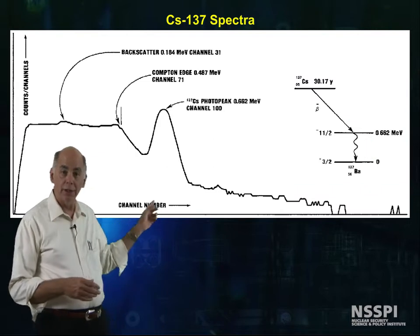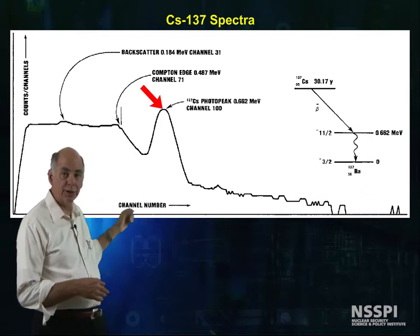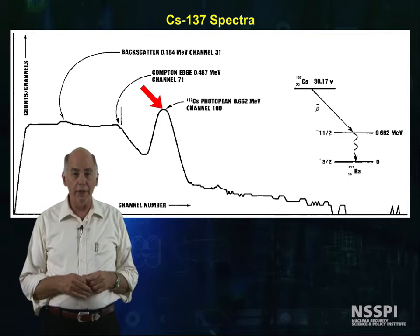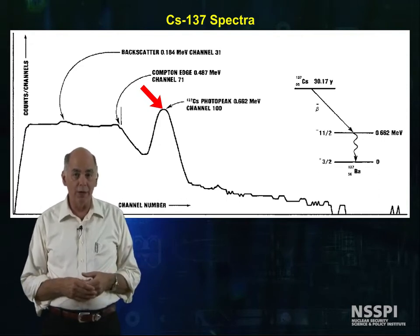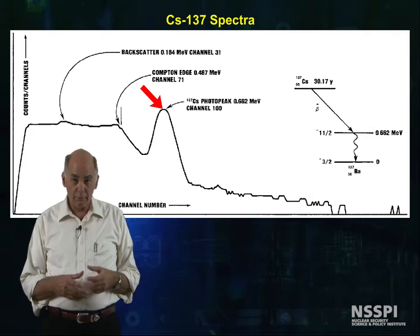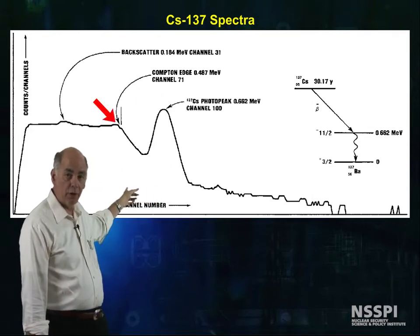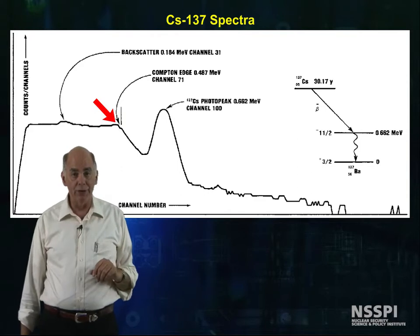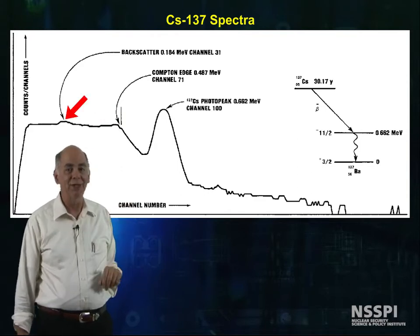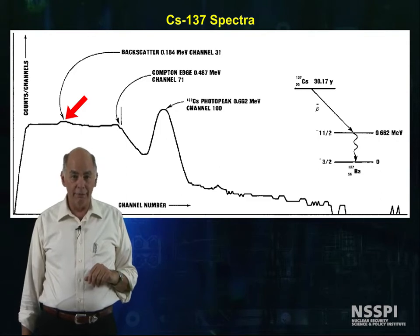Looking at the collected spectrum, here is the 662 keV photopeak, whose center is arbitrarily set to channel 100 of the MCA. We can locate the Compton edge at 487 keV and channel 71, and we can see a faint backscatter peak at about 184 keV.